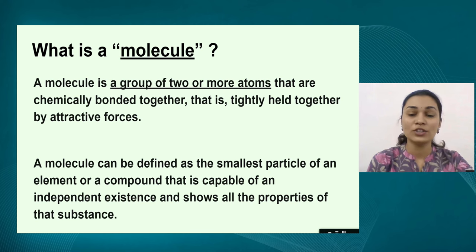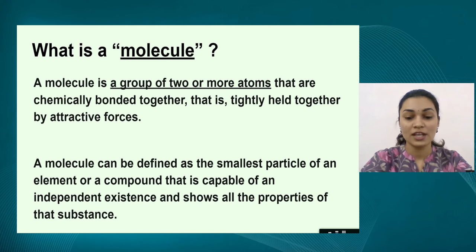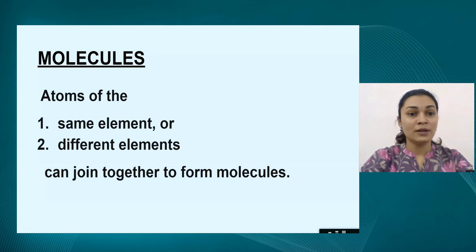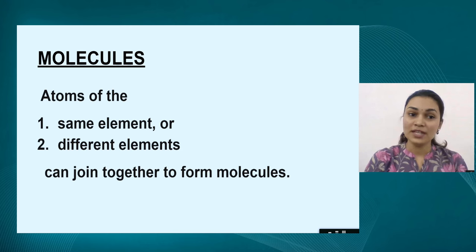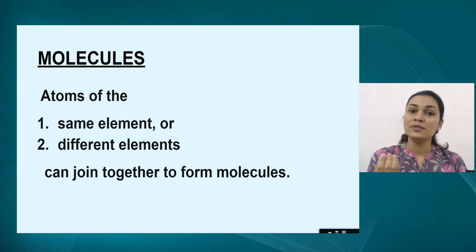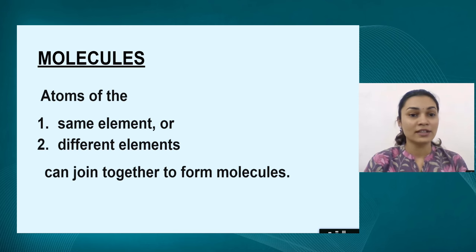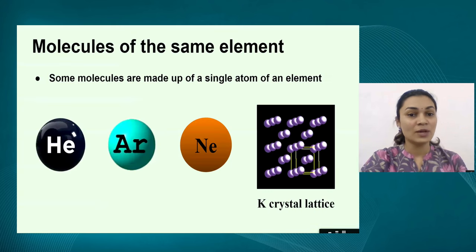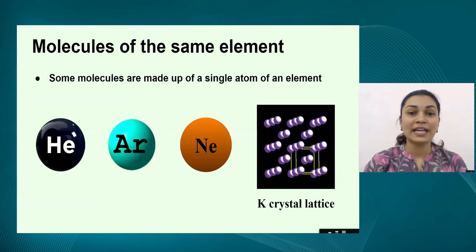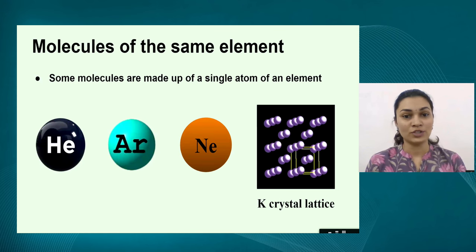A single molecule can show all the properties of a substance. Molecules are formed of atoms, and those atoms can either be of the same element or of different elements. These are the two main categories of molecules that we will be looking at today. Let's jump into the first category — and within this category, we have different types of molecules.